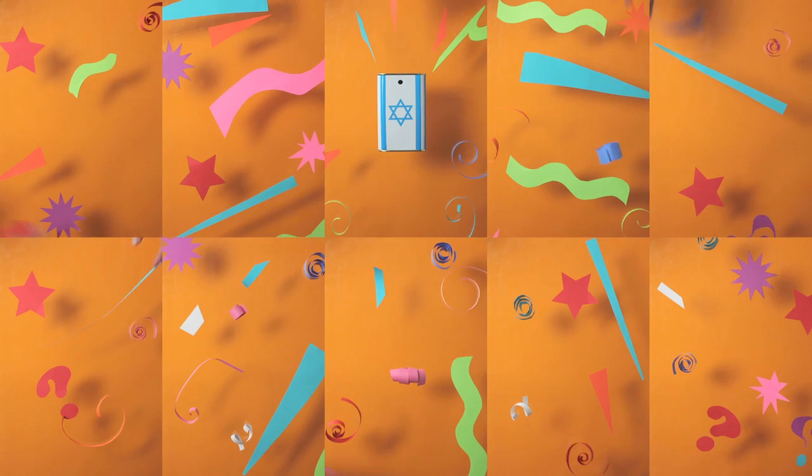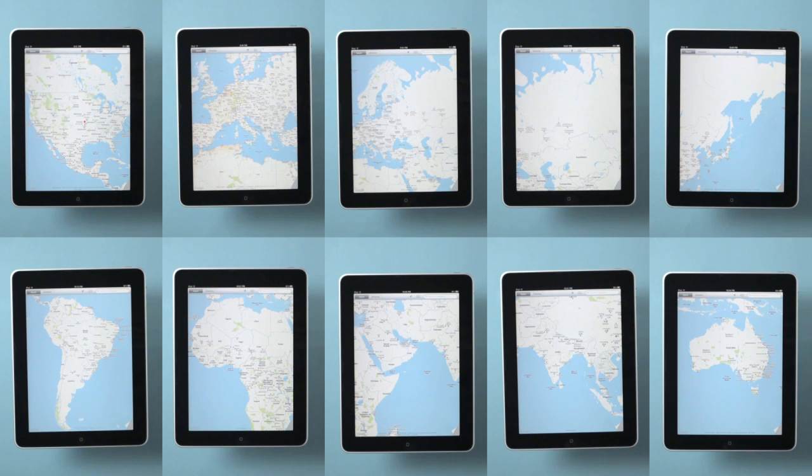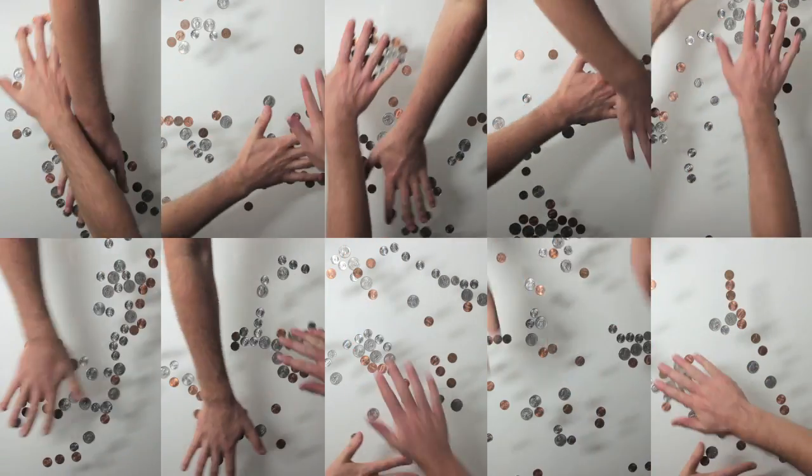How can we design a 21st century tzedakah box that connects us more deeply with issues around the world? What does this tzedakah box look like? Maybe it's not a box at all.